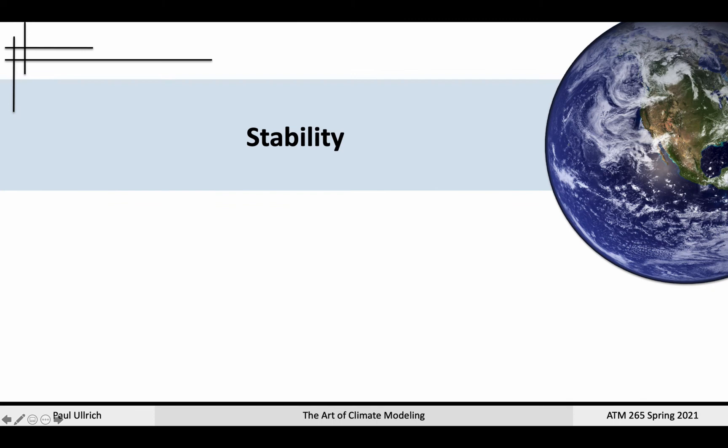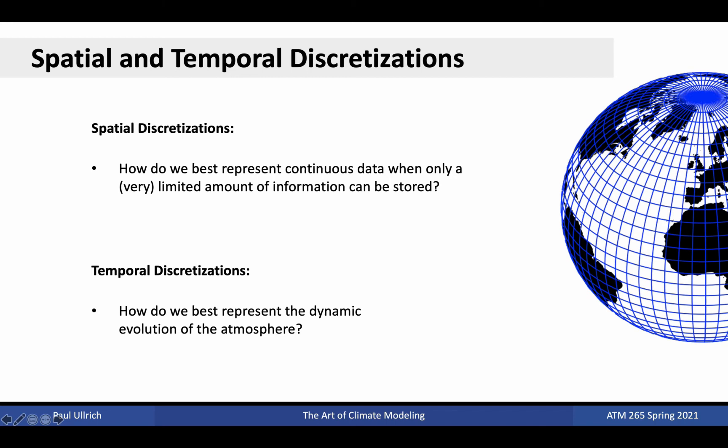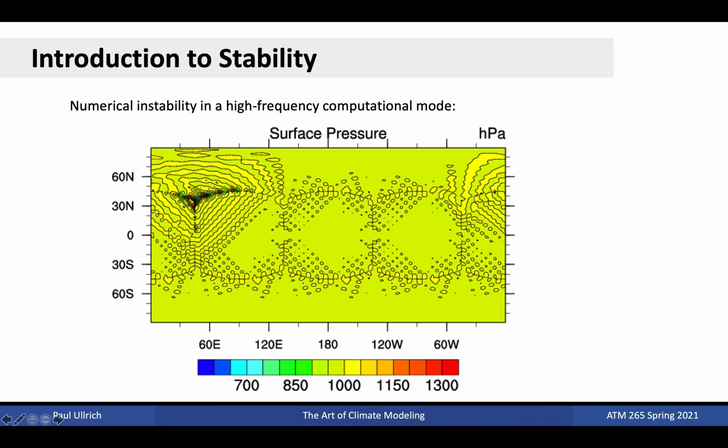Now that we've talked about spatial discretizations and temporal discretizations, we're set up to talk about model stability. So far, we've posed two questions. The first, related to spatial discretizations, is how do we best represent continuous data when only a very limited amount of information can be stored? The second, related to temporal discretizations, is how do we best represent the dynamic evolution of the atmosphere? What I would like to emphasize is that these two questions are inherently linked to one another. Your choice of spatial discretization does inform your options when it comes to temporal discretizations, and the temporal discretization can determine the performance of the spatial discretization. The choice of spatial and temporal discretizations cannot really be made separately.